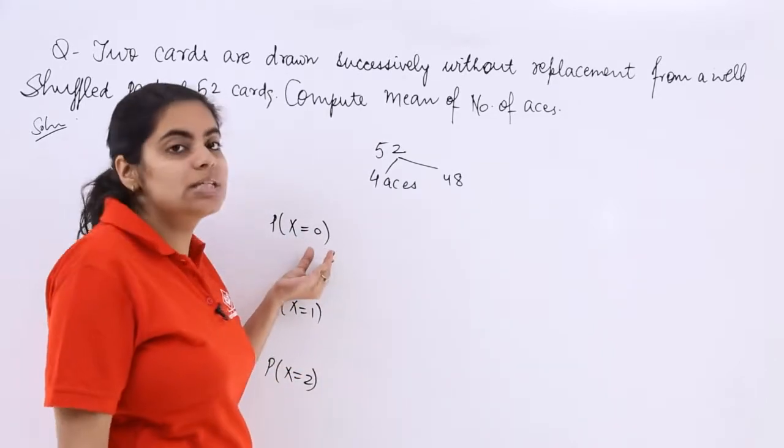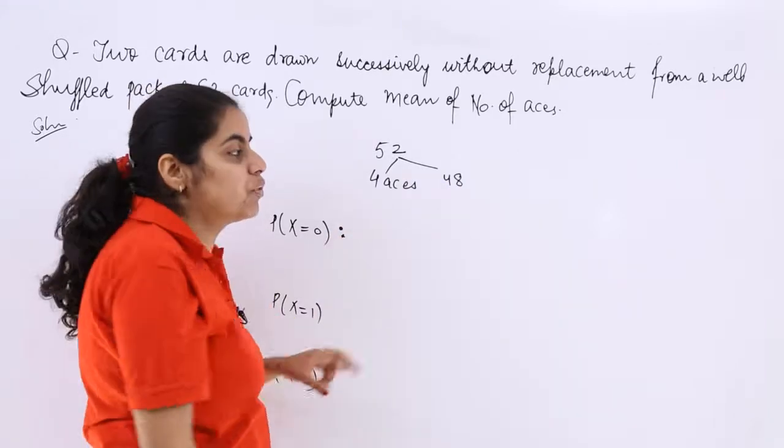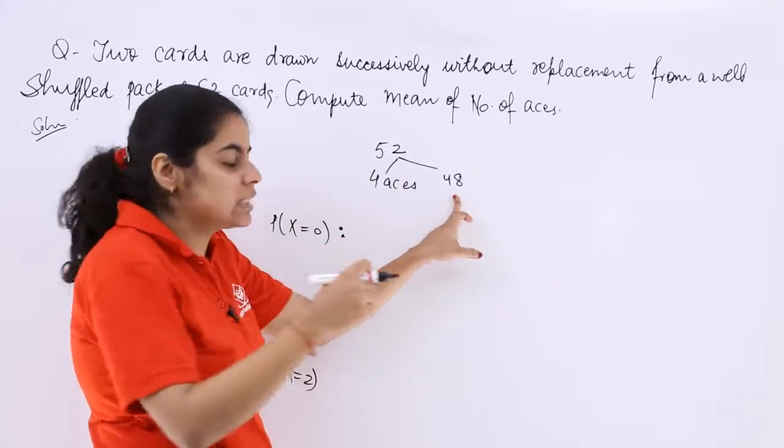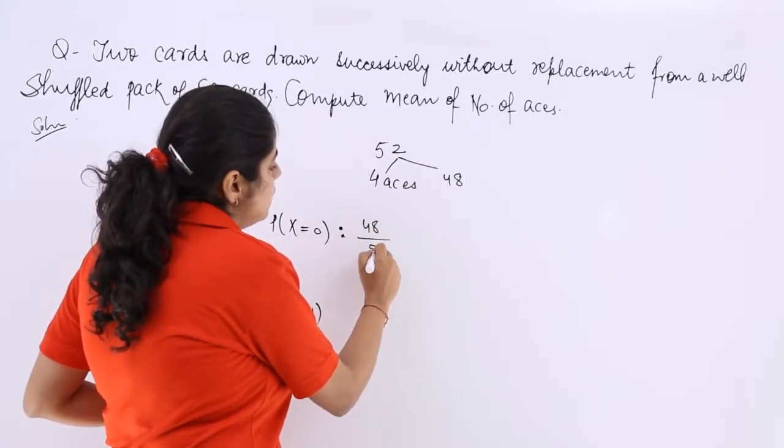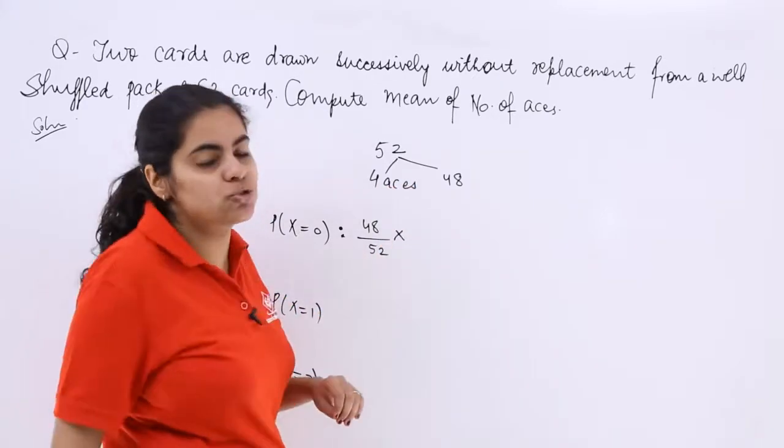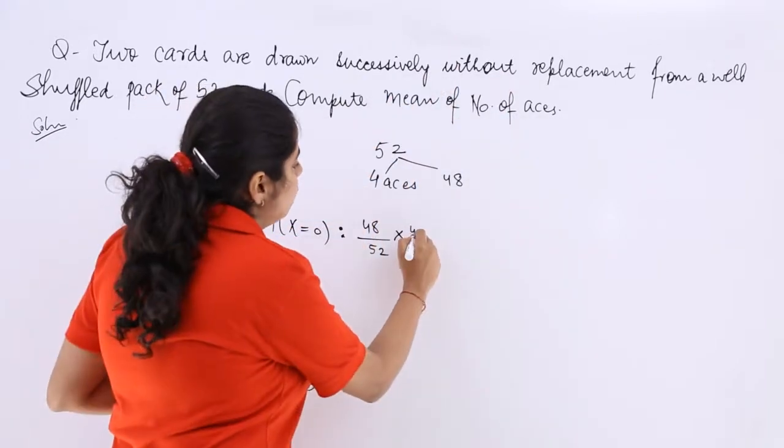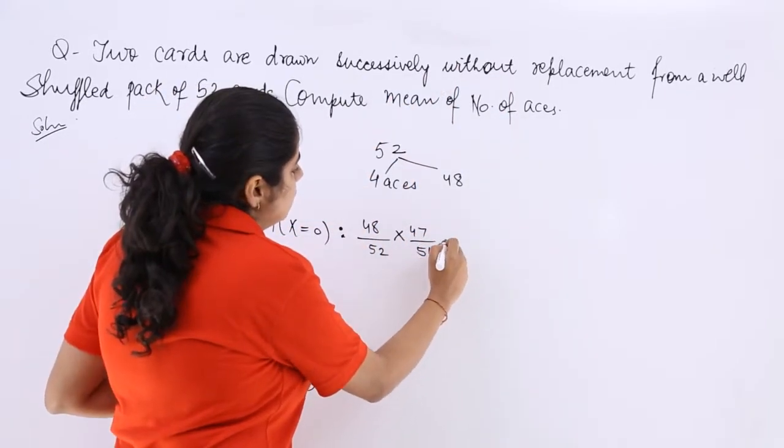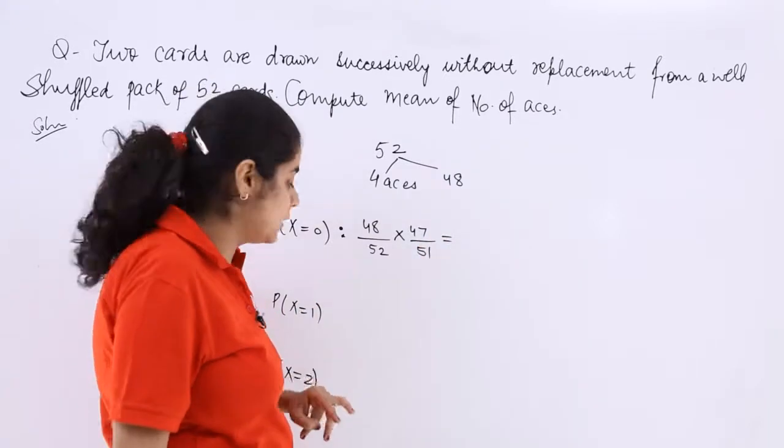So X equals 0 denotes no ace. When no ace is there, you are going to take out from 48 cards one card firstly. So 48C1 over 52C1 which is 48 over 52. Then since the second card also has to be drawn out without replacement, you are left with 47 cards and 51 here.